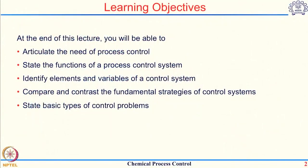Here are the objectives for this particular part of the lecture. At the end of this lecture, you should be able to articulate what is the need of process control, what are the different functions a process control system performs when implemented in a chemical plant, what are the different elements of a control system, what are the different types of control strategies and their advantages and disadvantages, and what are the different types of control problems which exist in the chemical industry.